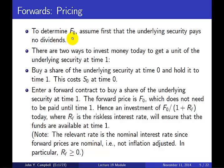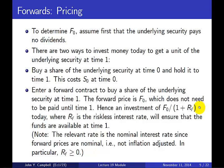How is F0 determined? We begin by assuming the underlying security pays no dividends. In that case there are two ways to invest money today to get a unit of the underlying security at time one. You can buy a share of the underlying security at time zero and hold it to time one, which costs S0. Or you can enter a forward contract to buy a share at time one. The forward price is F0 but doesn't need to be paid until time one, so if you set aside cash worth F0 divided by (1 + RF) today, that will grow at the risk-free interest rate and give you F0 at time one — exactly what you need to pay on the forward contract.